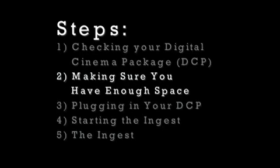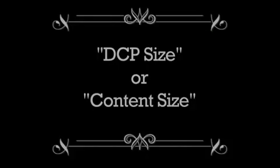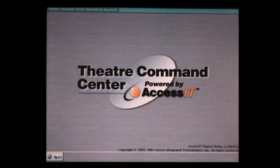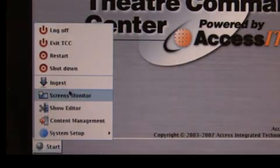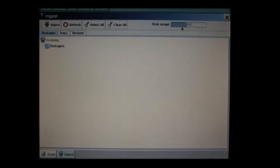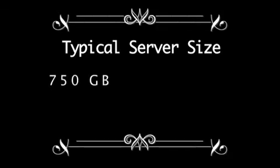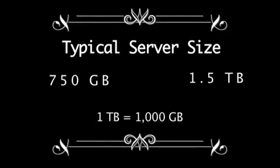Step 2: Making sure you have enough space. First, look on the DCP drive label under DCP Size or Content Size. Next, you'll need to check if you have enough space remaining on your server. All servers are different, so please refer to your server-specific manual. On the Access IT DoReMi server, start at the home screen, then click on Start, then Ingest. Look toward the top right under Disk Usage — this will tell you how much space you have remaining. A typical server's capacity is anywhere between 750GB to 1.5TB in size. Have enough space, Jimmy? That's great!